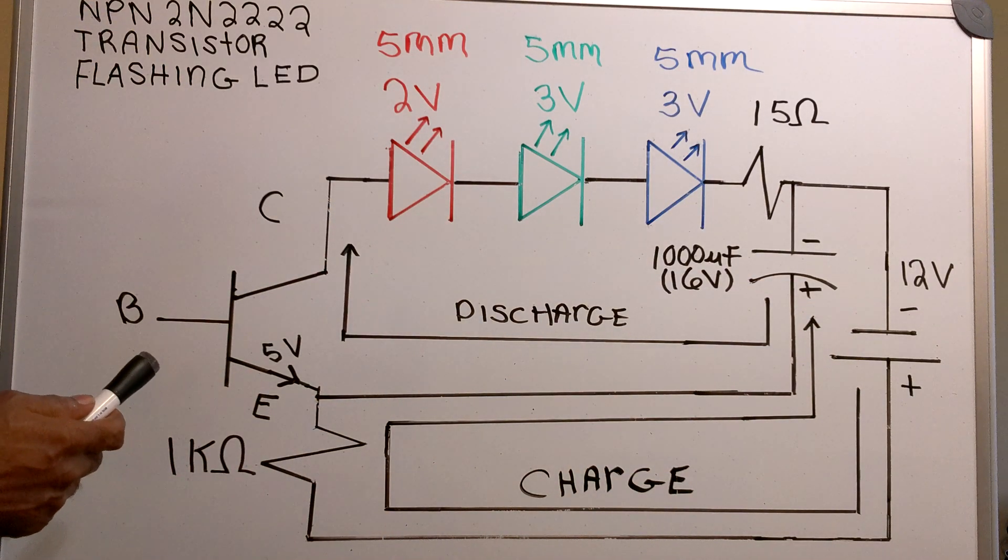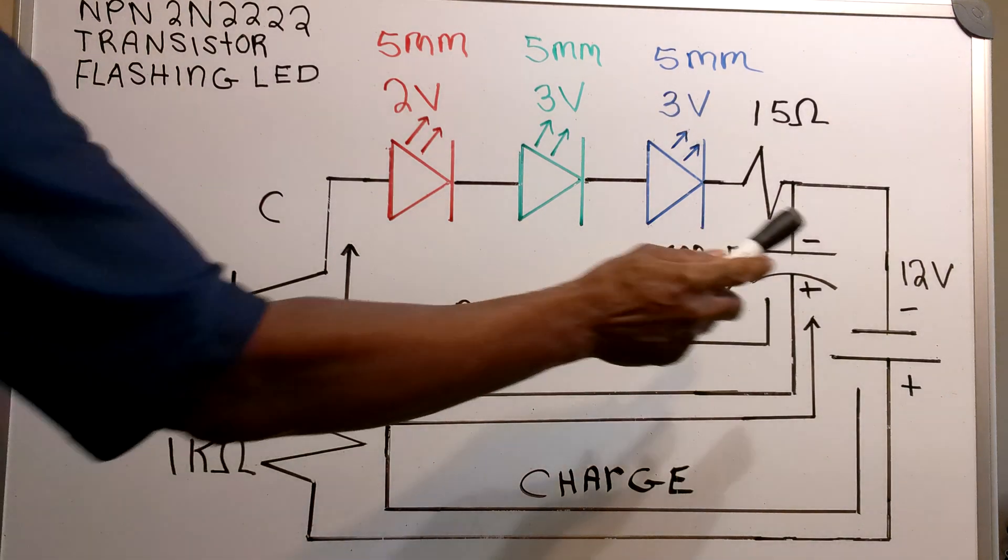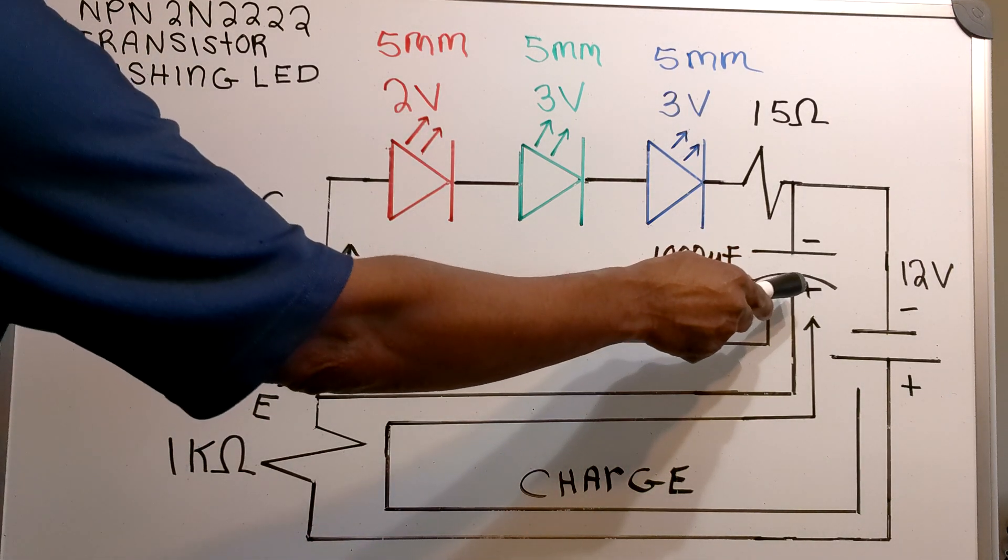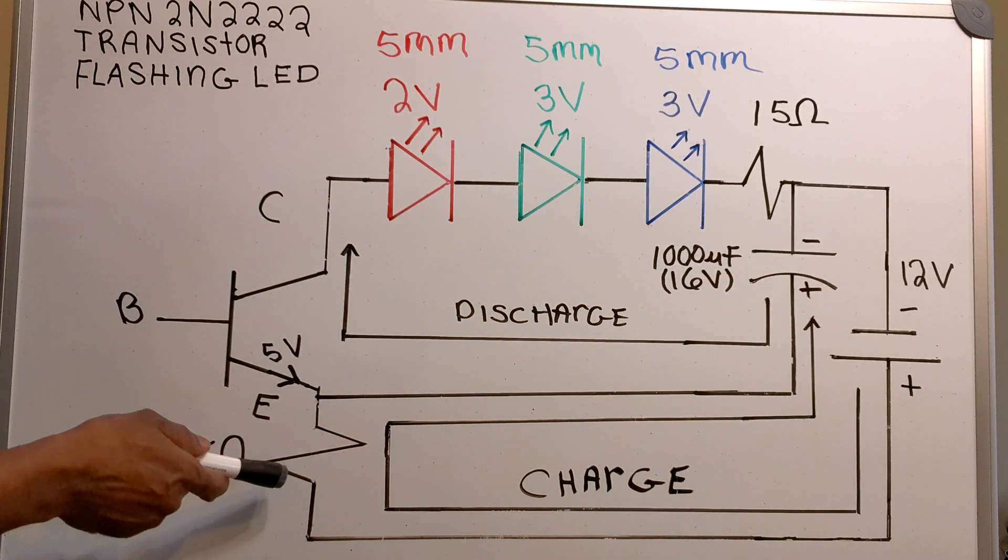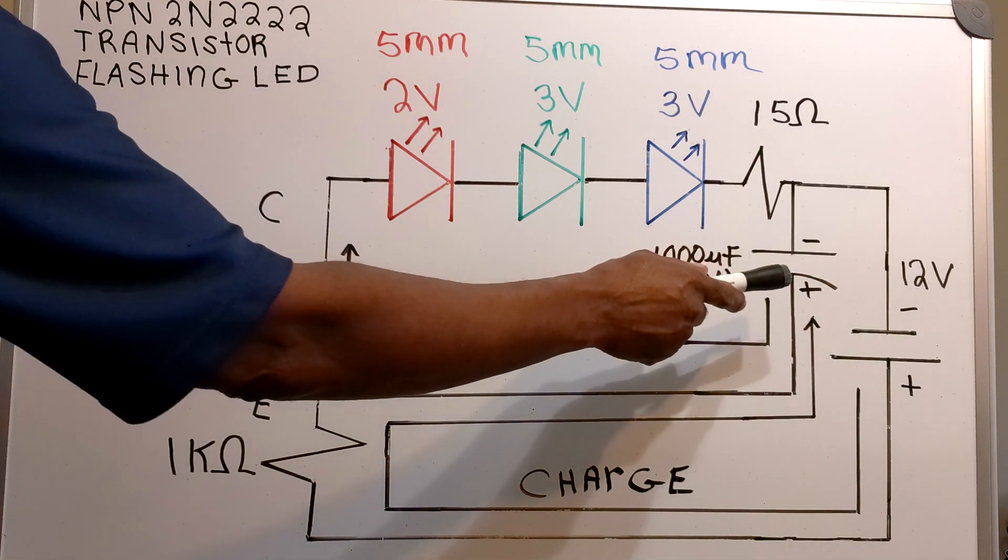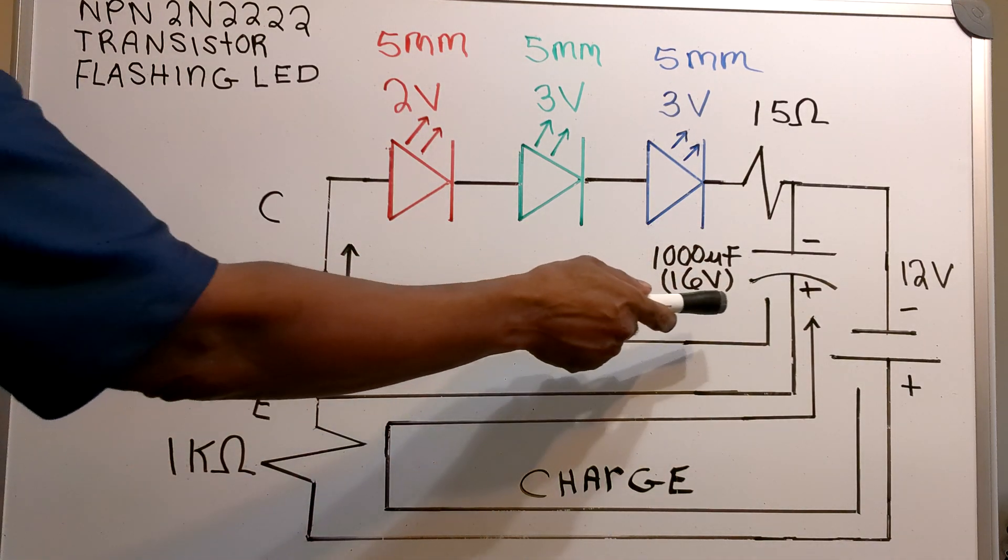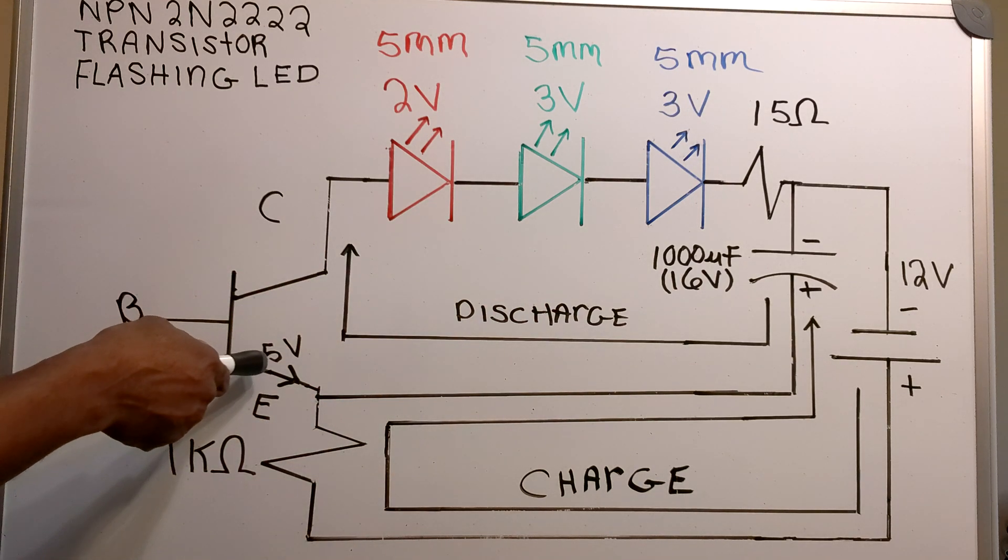How does this circuit work? The capacitor charges up through the 1K ohm resistor. At the same time, the capacitor puts 5 volts across the base-emitter junction.